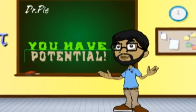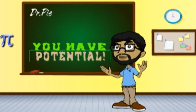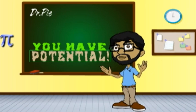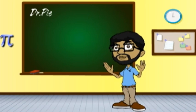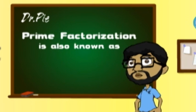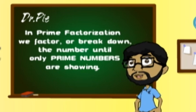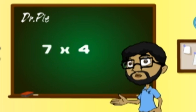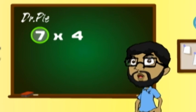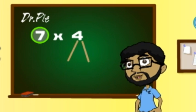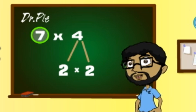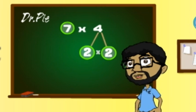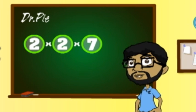Prime factorization is called a factor tree — when you break down the number as small as it can be. Two factors of 28 are 7 and 4. Draw a circle around 7 and break down the 4 more. Draw a couple more branches that extend from the 4; 2 and 2 are the branches closest to the floor. Do not forget to circle the 2's. Multiply all the circle numbers — you will not lose. 2 times 2 times 7 is 28.